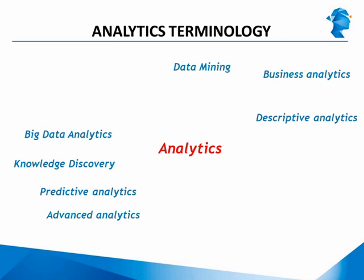Knowledge discovery is another term that gained currency towards the end of 2006. It is not as well known as some of the other terms, but its popularity is driven by a popular analytics website called KD Nuggets — KD standing for knowledge discovery. Knowledge discovery refers to the same thing as analytics, predictive analytics, advanced analytics, big data analytics, or even data mining. The term artificial intelligence was popular in the very early stages of computing and analytics around the 70s and 80s but is now almost obsolete. Machine learning is another term similar to artificial intelligence, and it too has lost its popularity in recent times to terms like analytics and its derivatives.